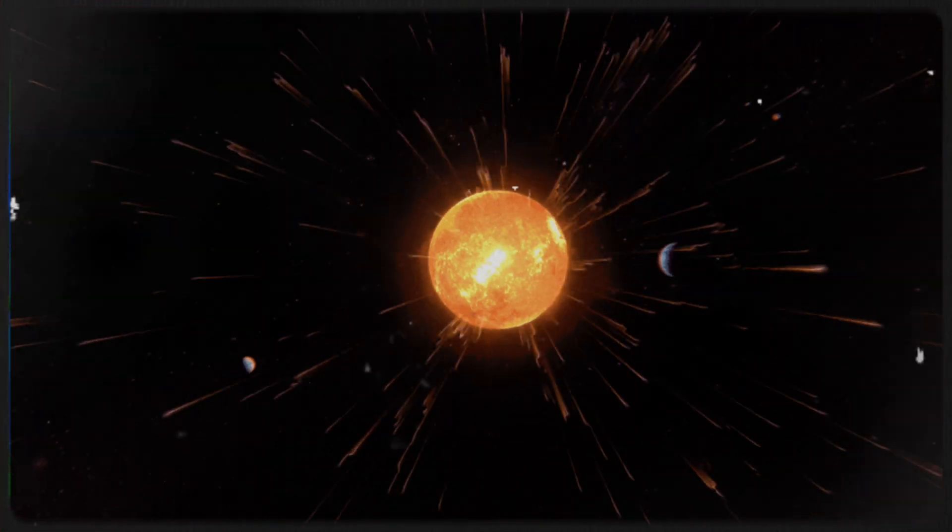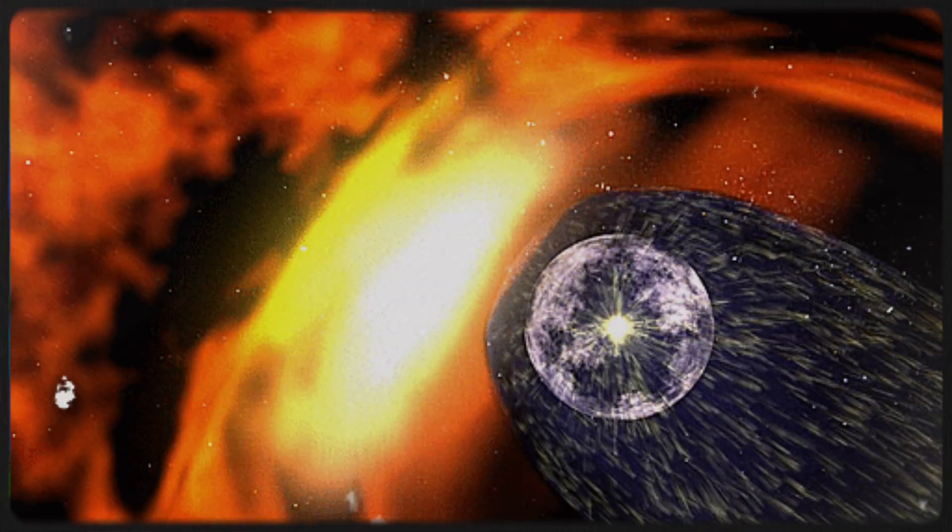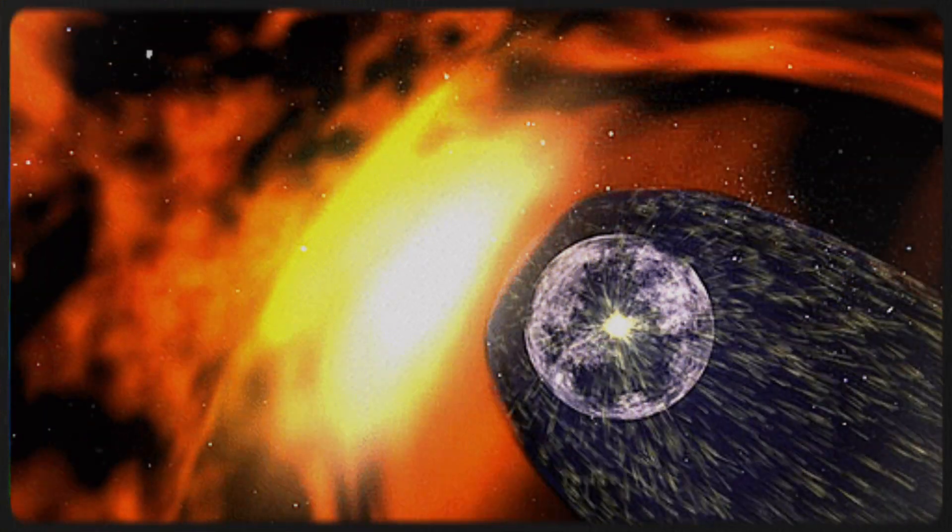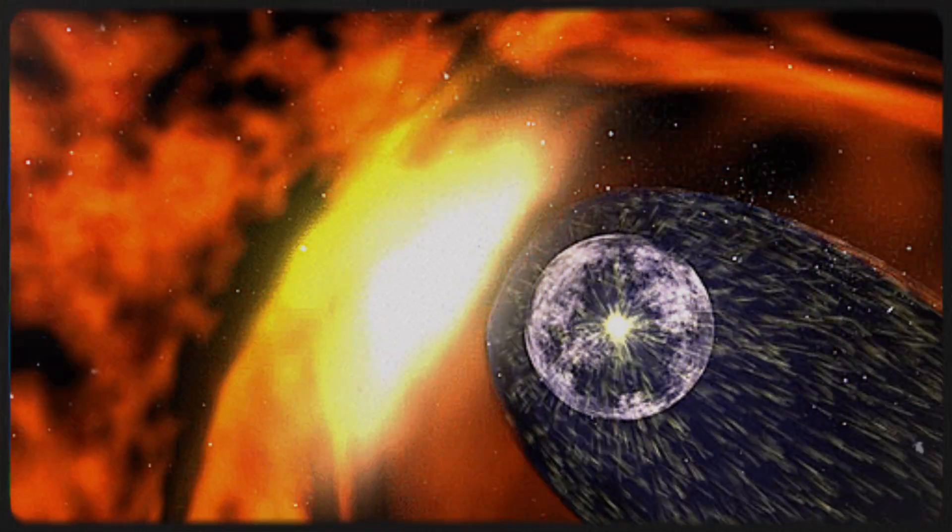This heliosphere carries the Sun's magnetic field into space until it is halted by the pressure of interstellar matter, creating a boundary known as the heliopause, preceded by a massive shock front called the termination shock.